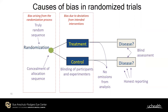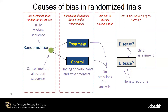RoB2 has five domains: bias arising from the randomization process; bias due to deviations from the intended intervention; bias due to missing outcome data; bias in measurement of the outcome; and bias in selection of reported results. From these five domains you form an overall risk of bias assessment.